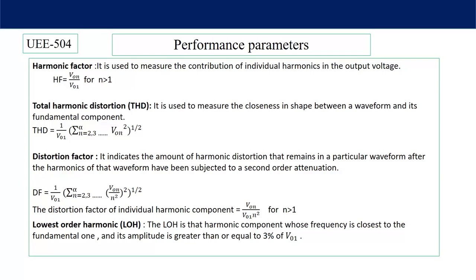Distortion factor indicates the amount of harmonic distortion that remains in a particular waveform after filtering. We know that harmonics can be filtered using different types of filters. If the order of the filter is increased, then THD will reduce, and the remaining harmonics across the output voltage are reduced. The formula for distortion factor is (1/V_01) times the square root of the sum from N=2 to infinity of (V_0N divided by N squared) squared.